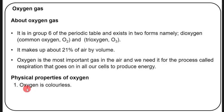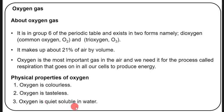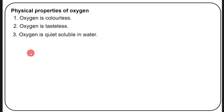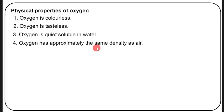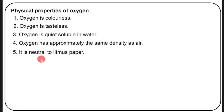The physical properties of oxygen: number one, oxygen is a colorless gas — we cannot see it. Number two, oxygen is tasteless. Number three, oxygen is quite soluble in water, which allows organisms living in water to breathe oxygen. Number four, oxygen has approximately the same density as air. Number five, it is neutral to litmus paper, meaning it has no effect on litmus paper.